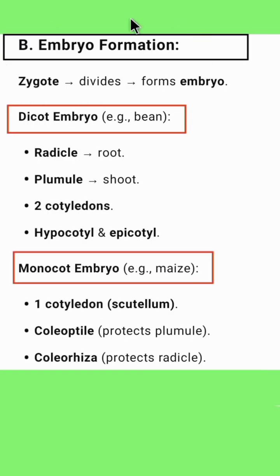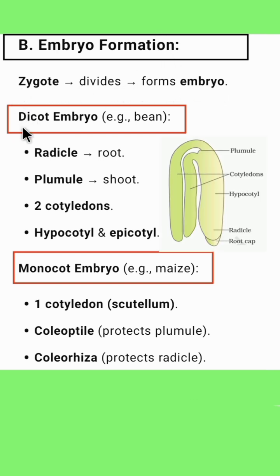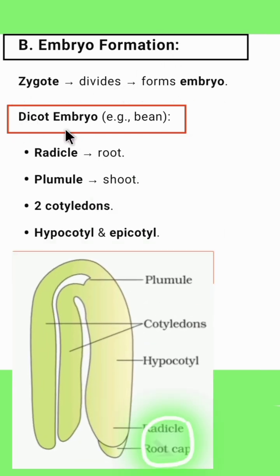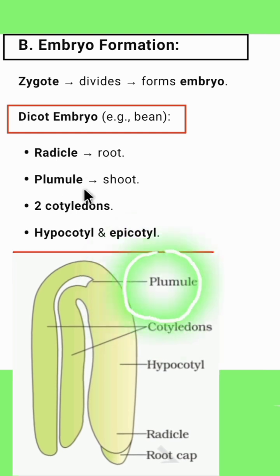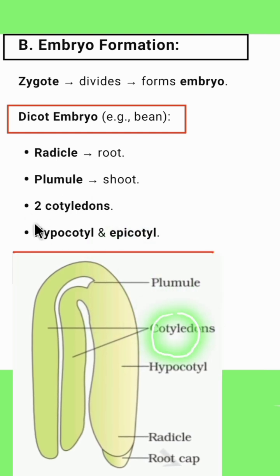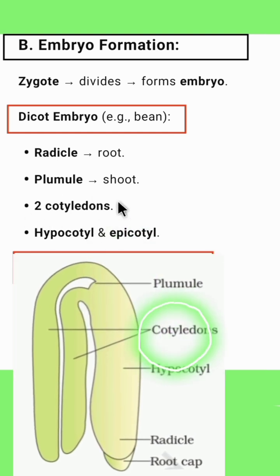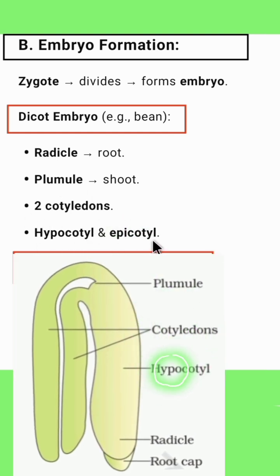The second process is embryo formation. The zygote divides and forms an embryo. In the case of a dicot embryo, the radicle forms the root and the plumule forms the shoot. Two cotyledons are present. Hypocotyl and epicotyl are also present in the dicot embryo.